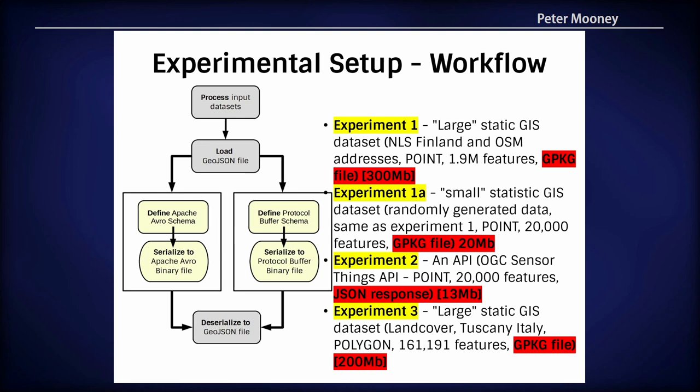Experiment two was a live API — an OGC SensorThings API with 20,000 features. We chose 20,000 as a rounded figure, but you could query the API for any amount of features. The JSON response yielded a file of 13 megabytes.